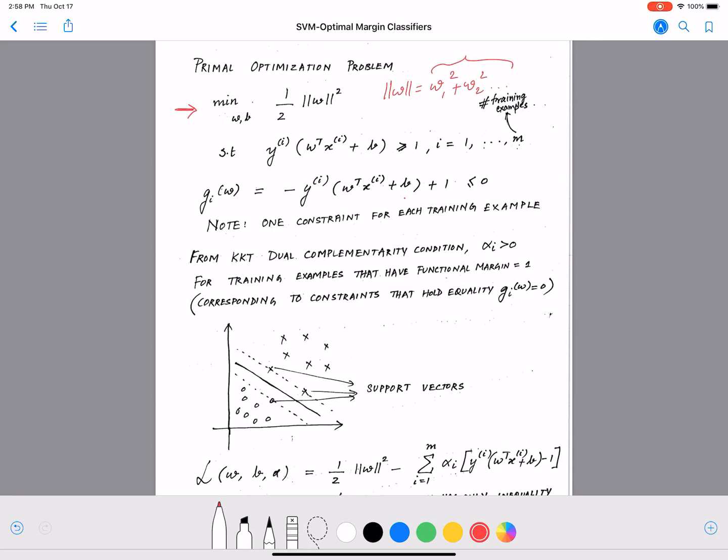This is subject to constraints and we said the constraint would be yᵢ times (w transpose xᵢ plus b) greater than or equal to one, where one is the size of our margin. So we are assuming a unit sized margin and deriving for that. We said that's a simpler case but still makes our derivation much easier.